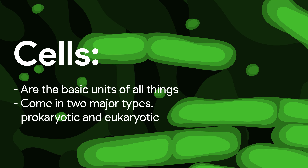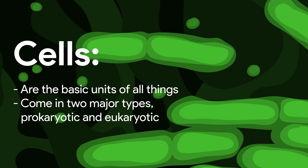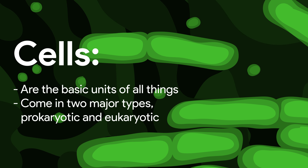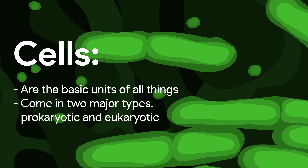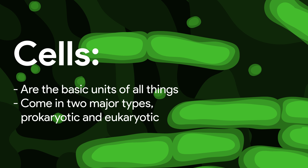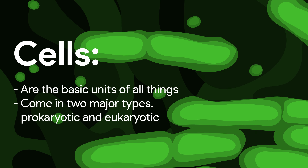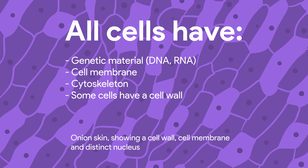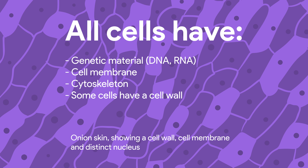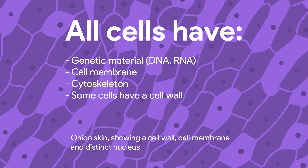But what are cells? Cells are organisational structures that complete all the processes of life. There are two kinds: prokaryotic cells and eukaryotic cells. All cells have certain features. These include some kind of genetic material, a cell membrane and a cytoskeleton.